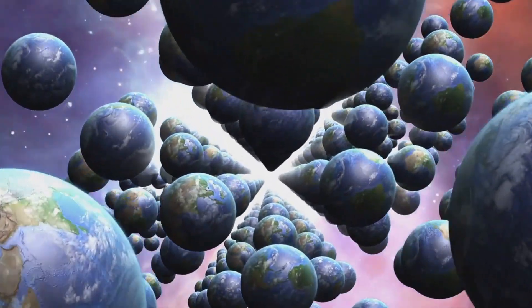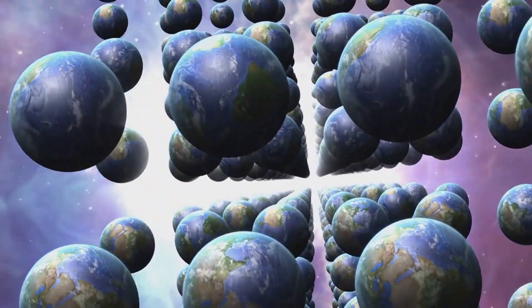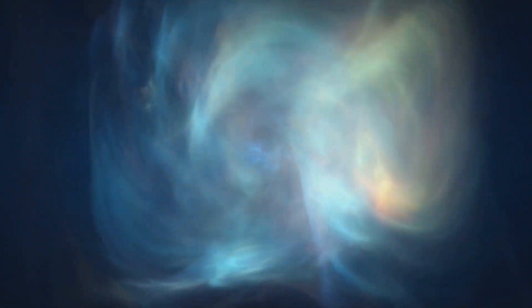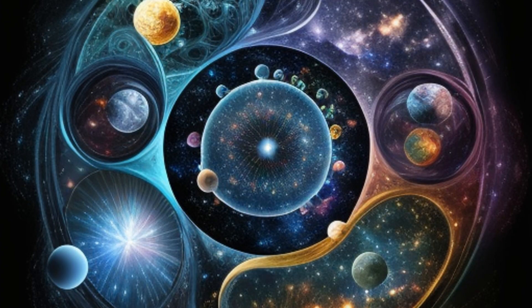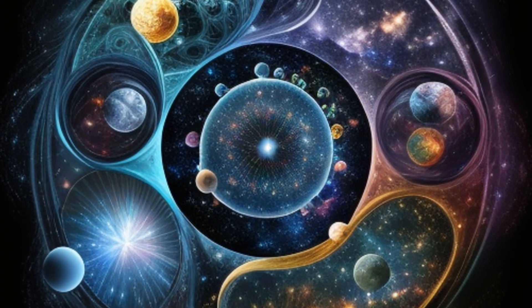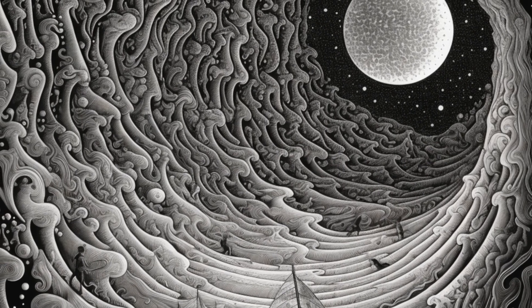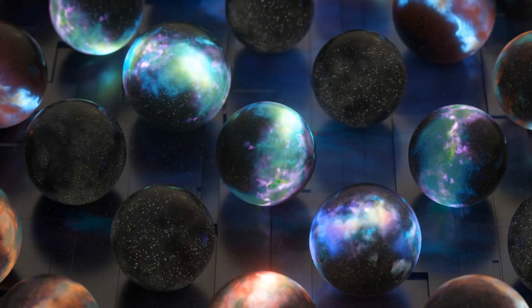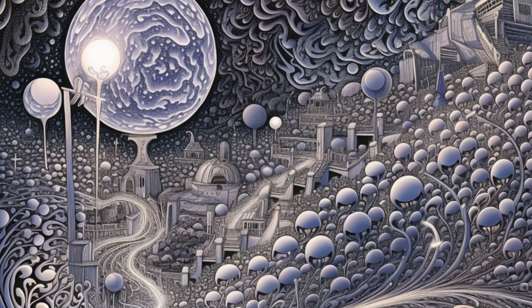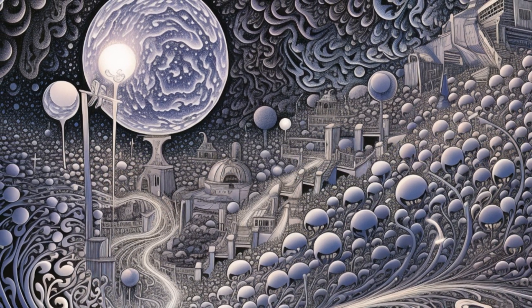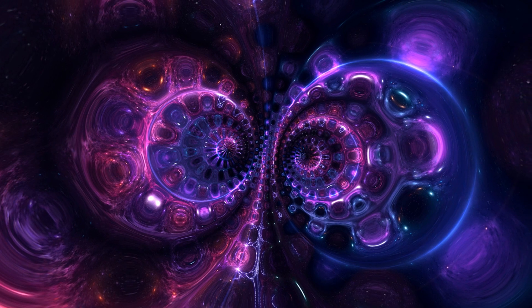The cyclic multiverse. This theory suggests our universe goes through cycles of expansion and contraction, with each cycle creating a new version of the universe. These cycles, repeating forever, would lead to an infinite series of universes, each with its unique start but following the same basic laws. These are just a few examples of the many multiverse theories physicists have come up with. Each theory, with its own set of assumptions and predictions, offers a different glimpse into the potential vastness and strangeness of reality beyond our own universe.